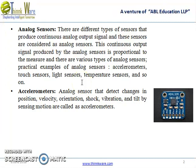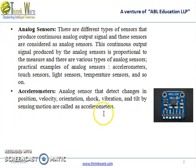Example 1: Accelerometer. Analog sensors that detect changes in position, velocity, orientation, shock, vibration, and tilt by sensing motion are called accelerometers.